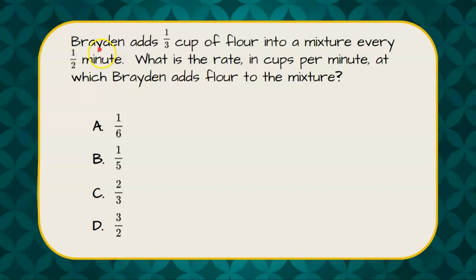Our question states that Brayden adds one-third cup of flour into a mixture every one-half of a minute. What is the rate in cups per minute at which Brayden adds flour to the mixture?